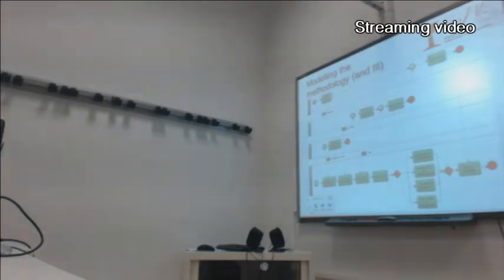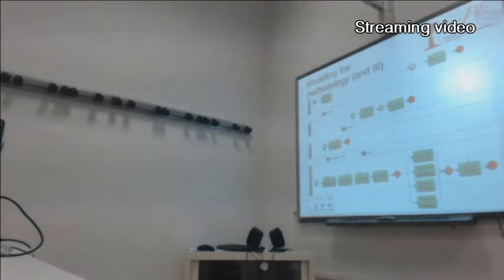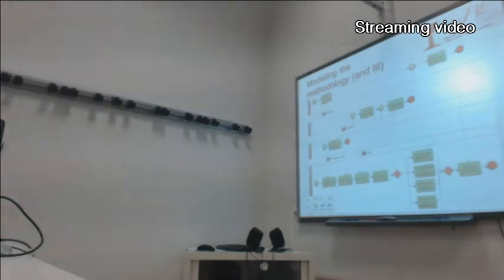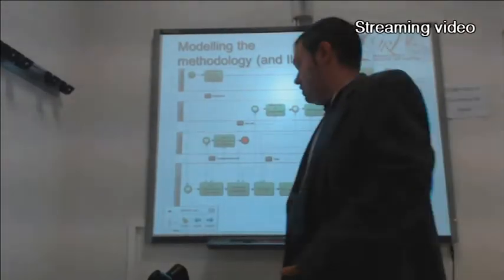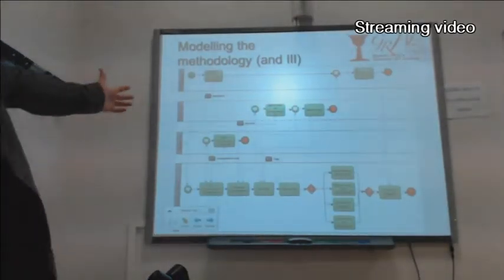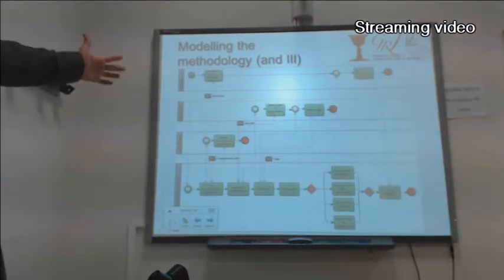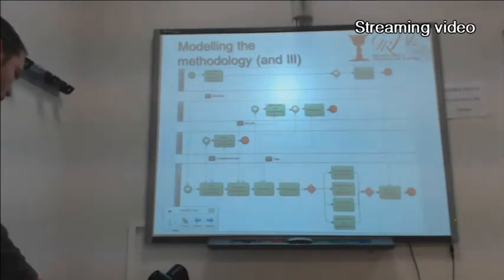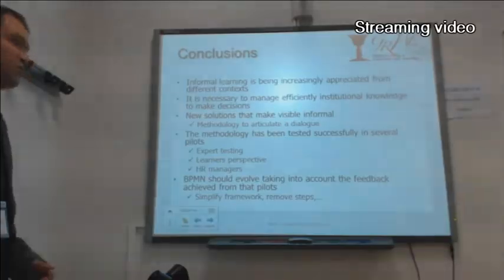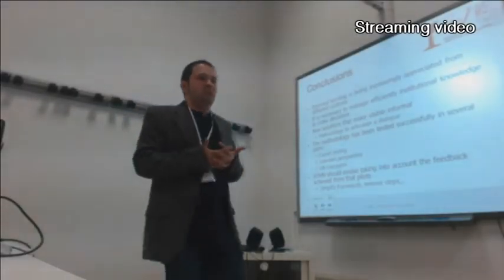The best way to represent this is in this kind of diagram, because you can see all the different possibilities. We are describing some of the common ways to use the tools — not only the tools, but also showing the potential of this kind of diagram for describing business processes. As conclusions, I would like to say that informal learning is becoming increasingly important and we have to take it into account.